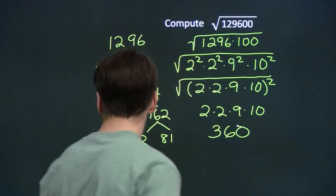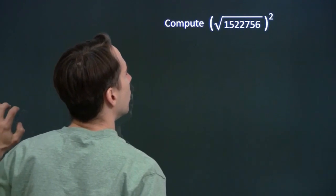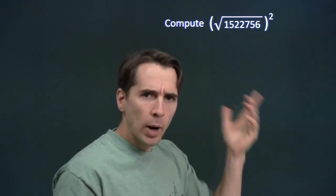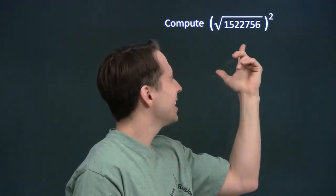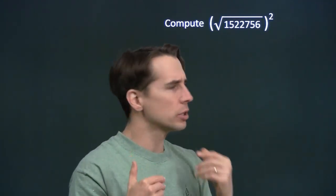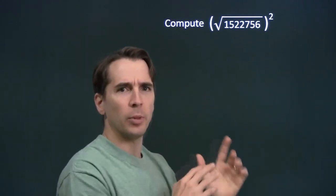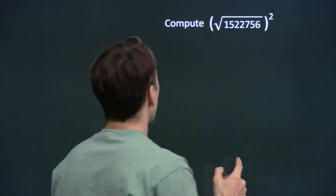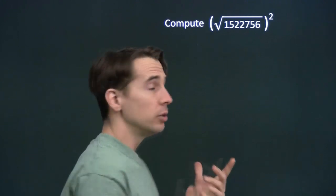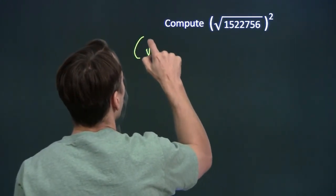And we're on to the next problem. This one wants the square of a square root. Sometimes when I see a new problem like this, I try to simplify it — solve a simpler version — and maybe we can use what we learn to solve this problem.